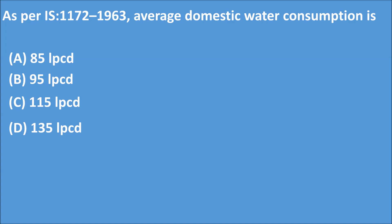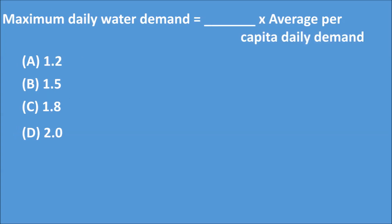Q2: Maximum daily water demand is equal to how many times the average per capita daily demand? A) 1.2, B) 1.5, C) 1.8, D) 2.0. The correct answer is Option C: 1.8. Maximum daily water demand is equal to 1.8 times average per capita daily demand.